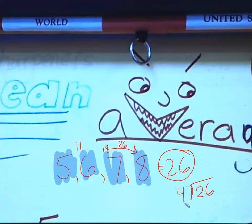So 4 goes into 26 6 times. 6 times 4 is 24. So our average, we're going to have a remainder of 2. Our average is 6 with a remainder of 2.